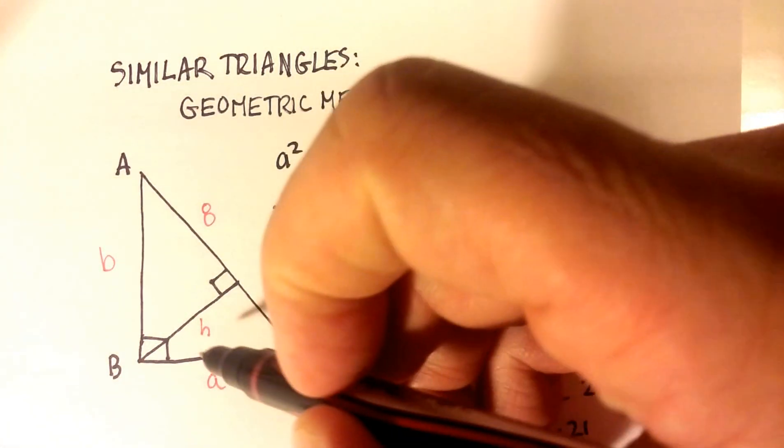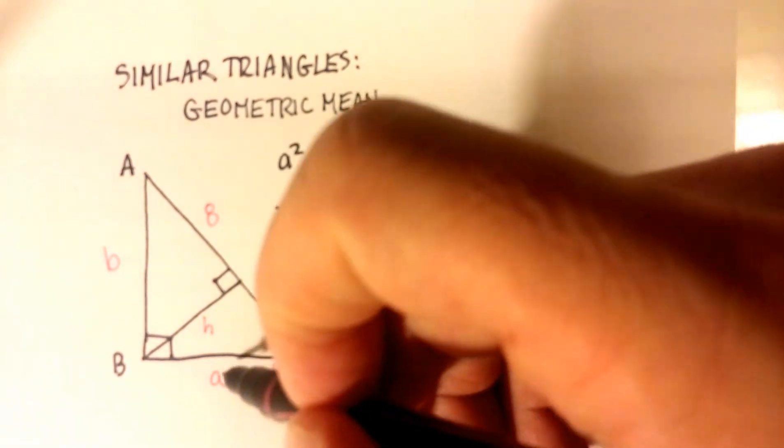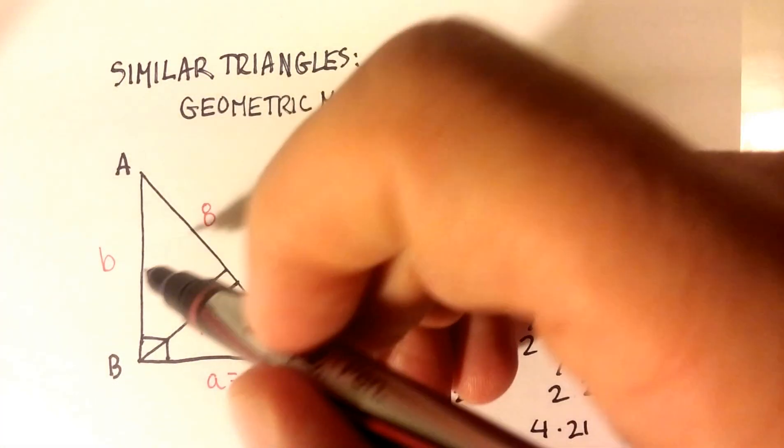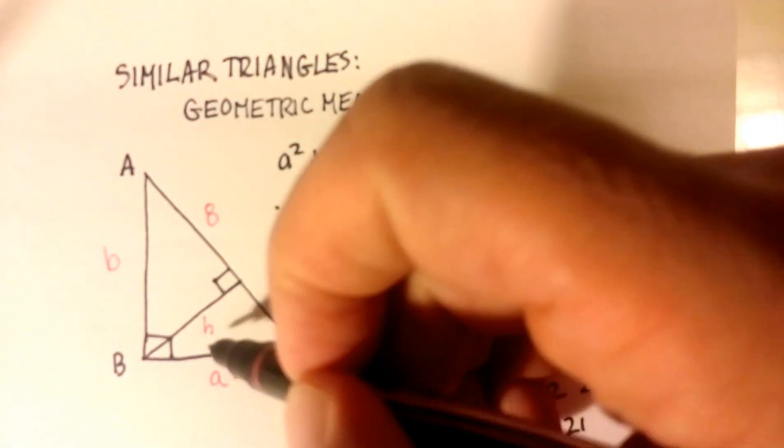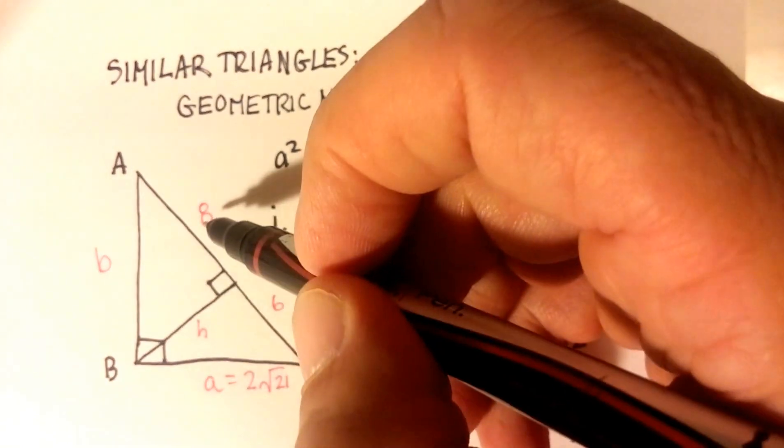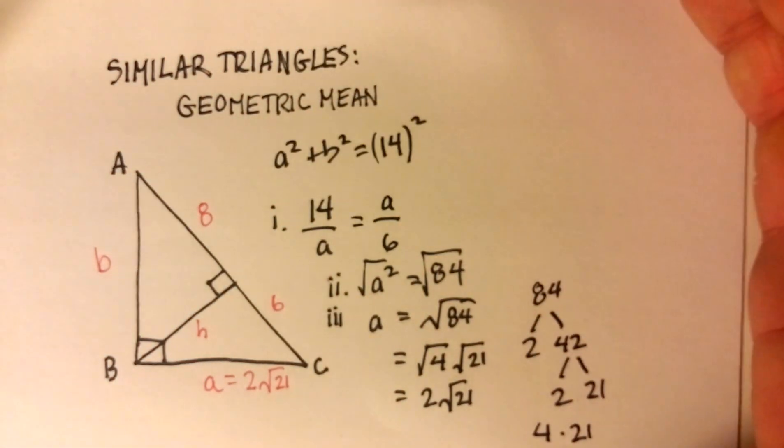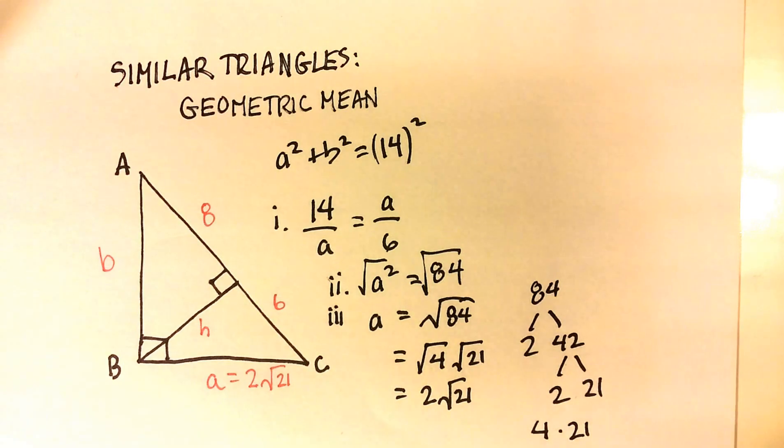We could actually solve for this altitude H, because H squared plus 6 squared would equal this 2 radical 21 squared. We know that if we could figure out what this B is and we figure out what this H is, we could figure out, for example, this squared plus this squared would be equal to 6 squared. So there's a whole bunch of different relationships that you can actually solve for. I hope that was helpful. Thank you.